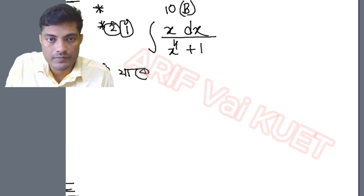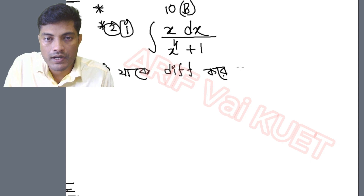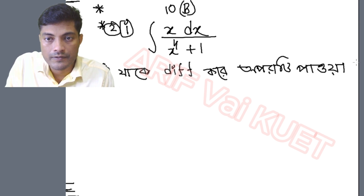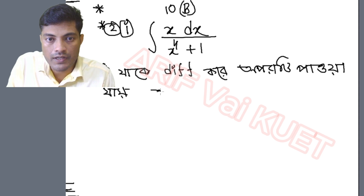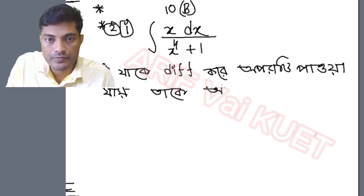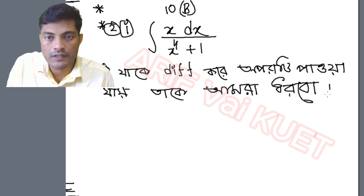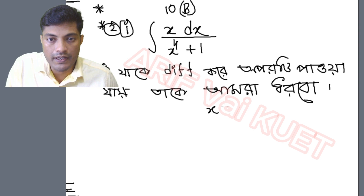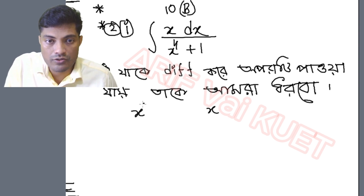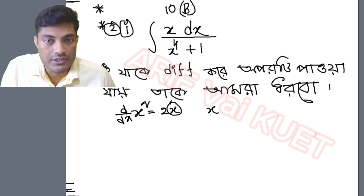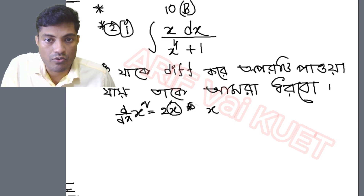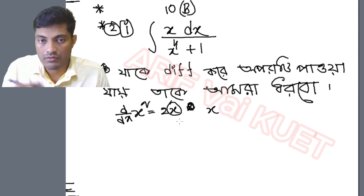Jake differentiation kore — doing differentiation here. If you differentiate x, you get x. Let's apply differentiation: taking x squared and differentiating gives us x.